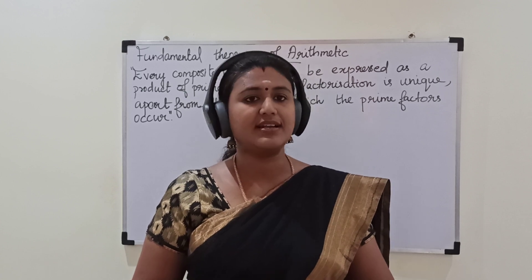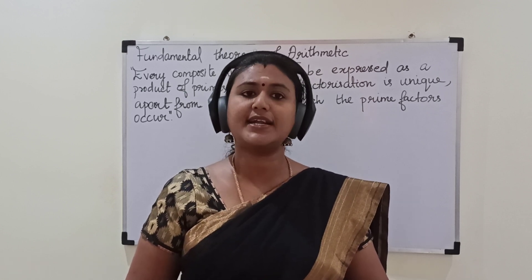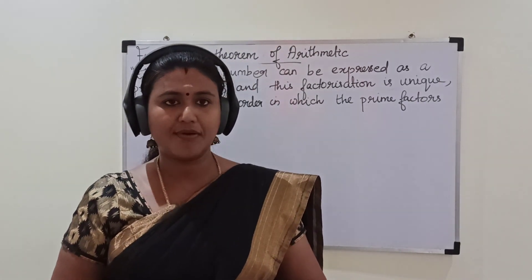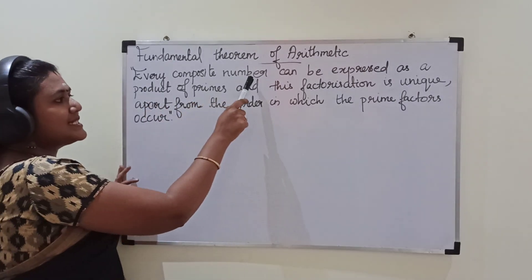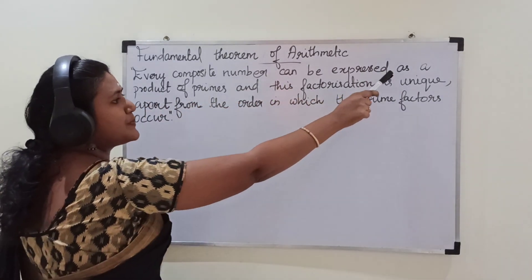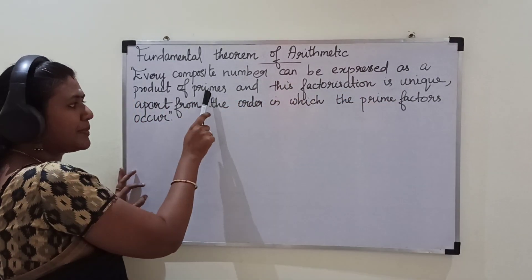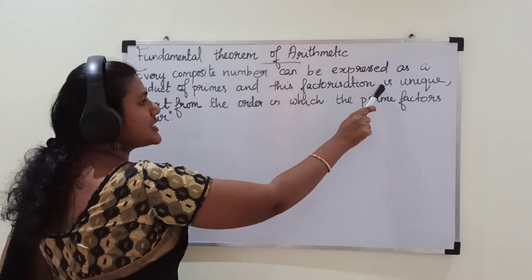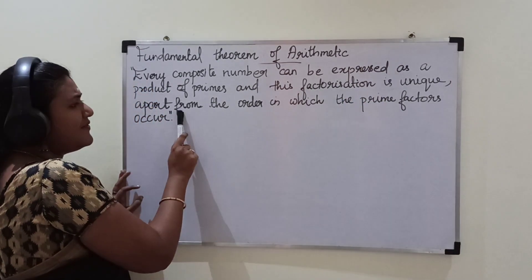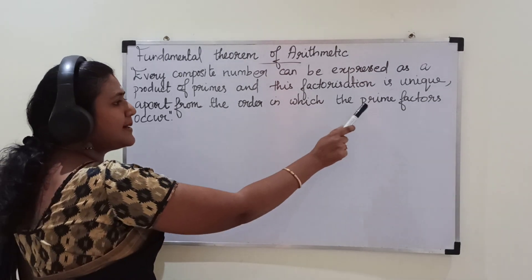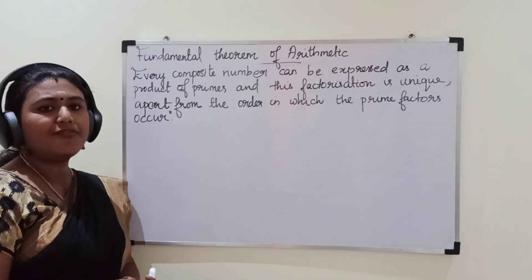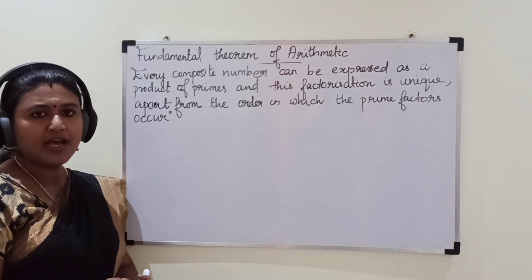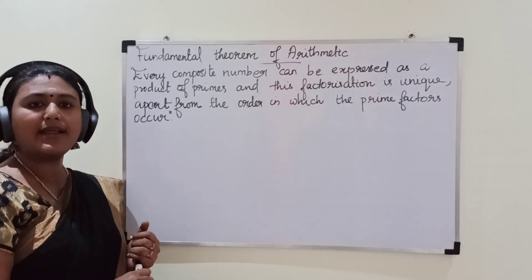In today's class, we will learn another property: the Fundamental Theorem of Arithmetic. So what is the Fundamental Theorem of Arithmetic? Every composite number can be expressed as a product of primes, and this factorization is unique apart from the order in which the prime factors occur. This is the statement of the Fundamental Theorem of Arithmetic. We will now see it through an example.